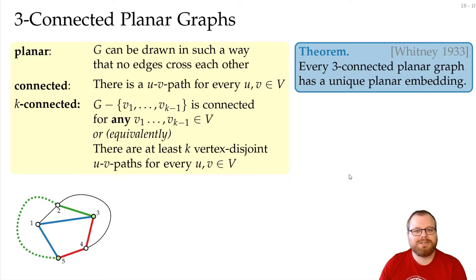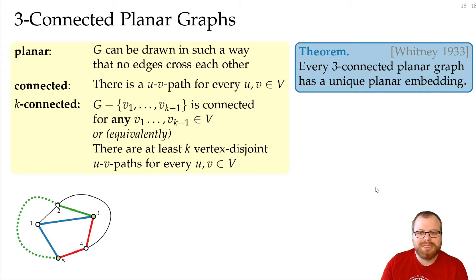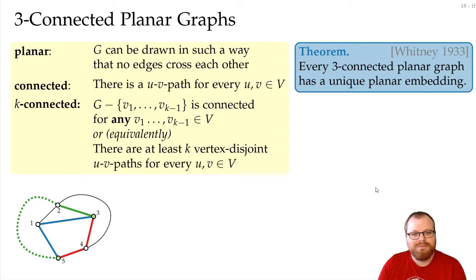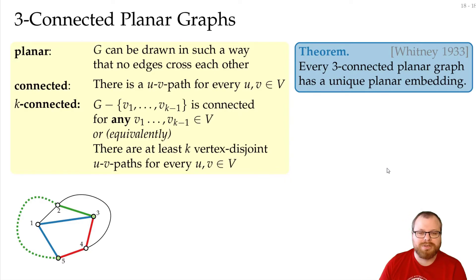These 3-connected planar graphs are quite special. In fact, in 1933, Whitney proved that for every 3-connected planar graph we have a unique planar embedding — and this is a really strong property. If we have bi-connected graphs, then we can have an exponential number of planar embeddings. But if we are 3-connected, then there is only a single one, up to the choice of the outer face.